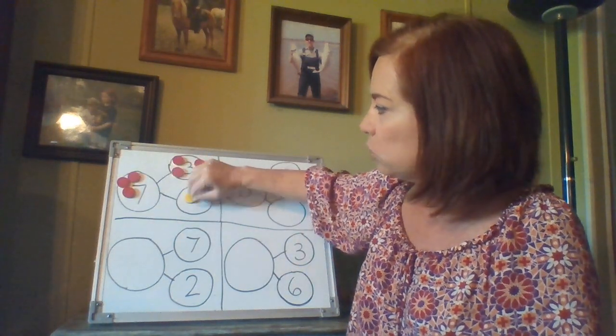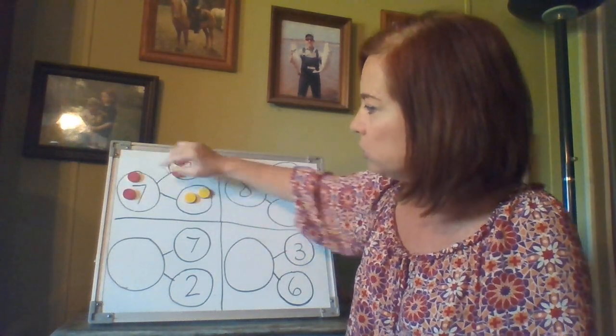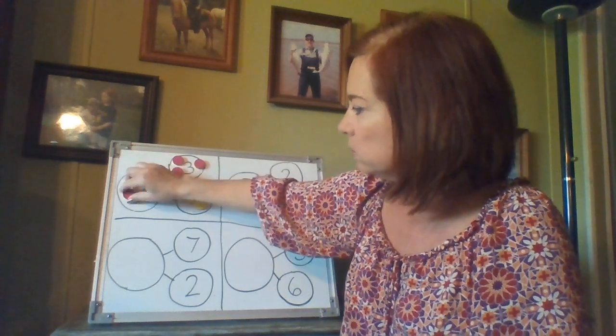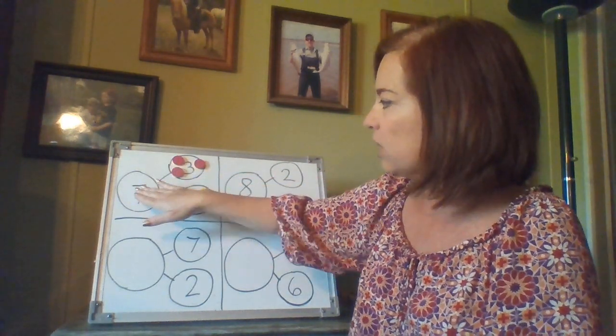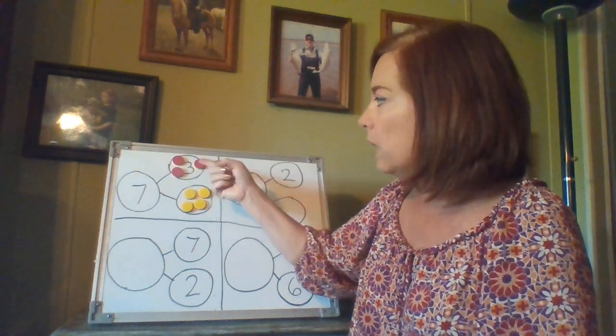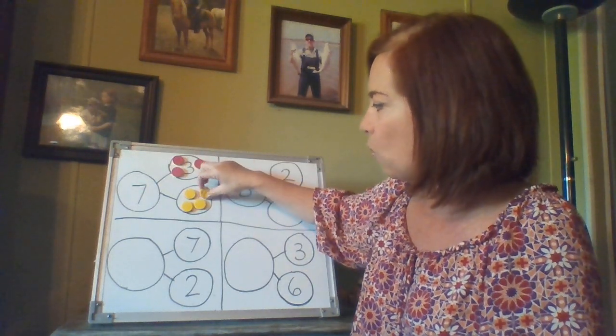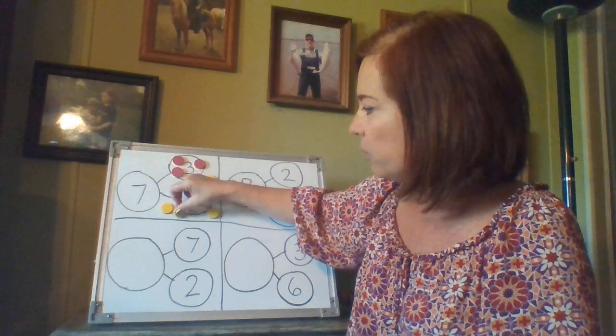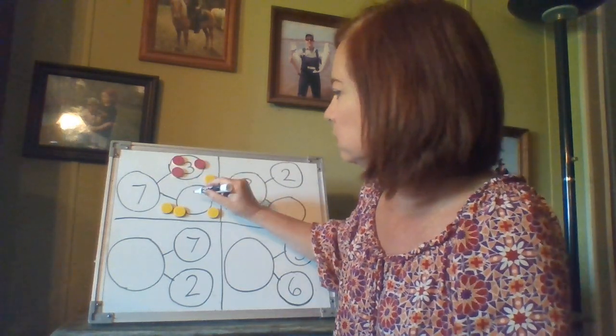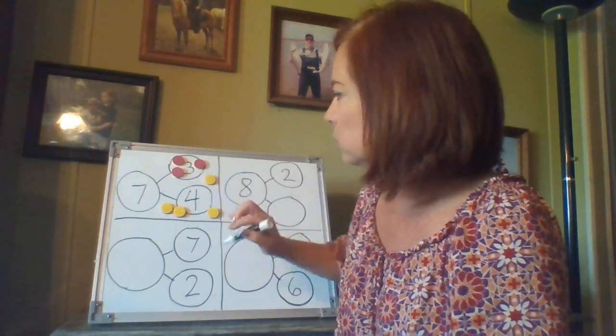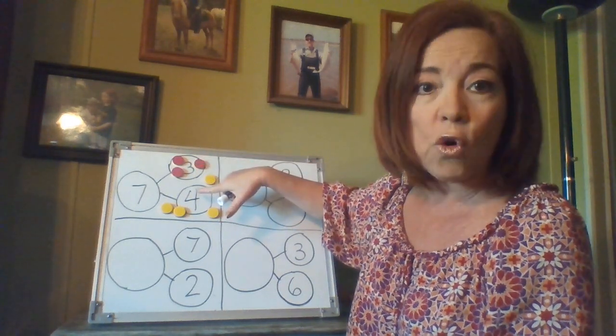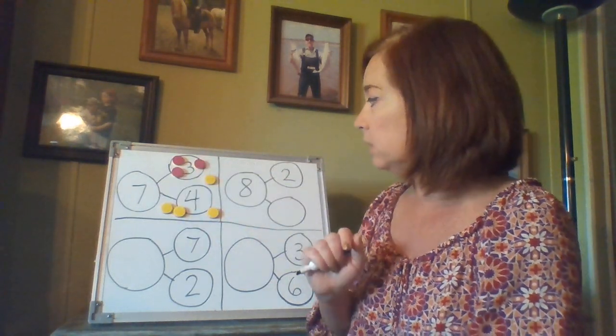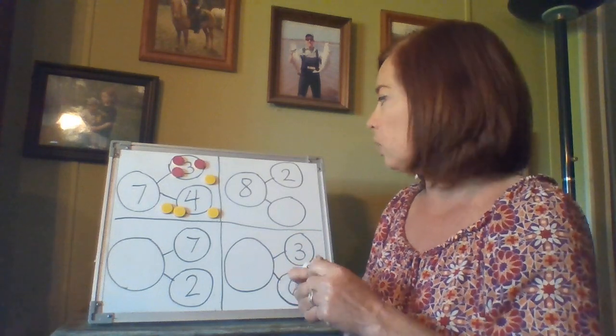I see four. So I can put them in there boys and girls. And I see seven is the whole and the two parts are three and four. So I'm going to go ahead and move these counters out of the way and put my four. So three plus four equals seven. All right. Now let's try the next one.